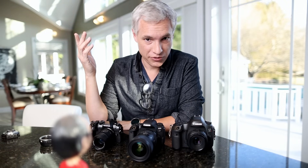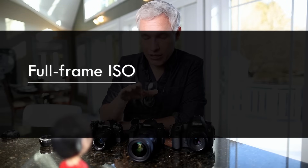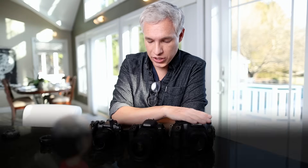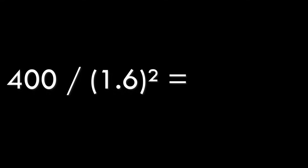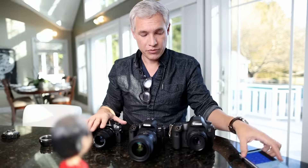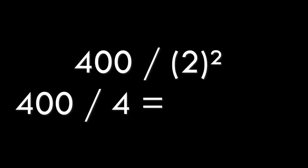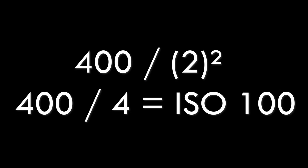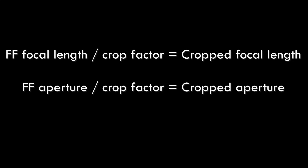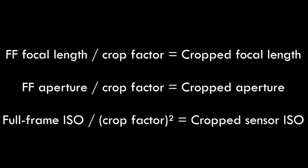There's an easy formula you can use to figure out the ISO too. Divide the ISO you would use on your full-frame camera by the crop factor squared. We started out with ISO 400 here. I divide 400 by the crop factor 1.6 squared, and that gives me an ISO of about 160. For this camera, divide 400 by 2 squared — 2 squared is 4 — so I end up with an ISO of 100. Now we have complete equivalence: focal length divided by the crop factor, aperture divided by the crop factor, and ISO divided by the crop factor squared.